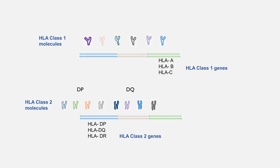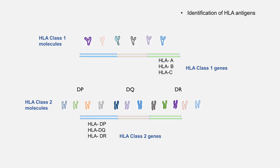In case of HLA DR, there can be more than one gene for the beta peptide chain, so a person can have more than two HLA DR molecules as well. So in this case, a person can have six different types of HLA class 1 molecules and 12 different types of HLA class 2 molecules. When we perform HLA typing, we can either identify HLA molecules or HLA antigens, or we can perform more detailed analysis to know which HLA alleles a person has.